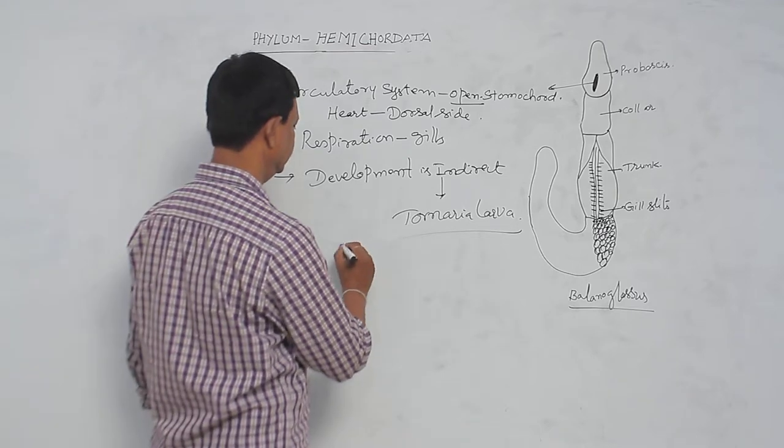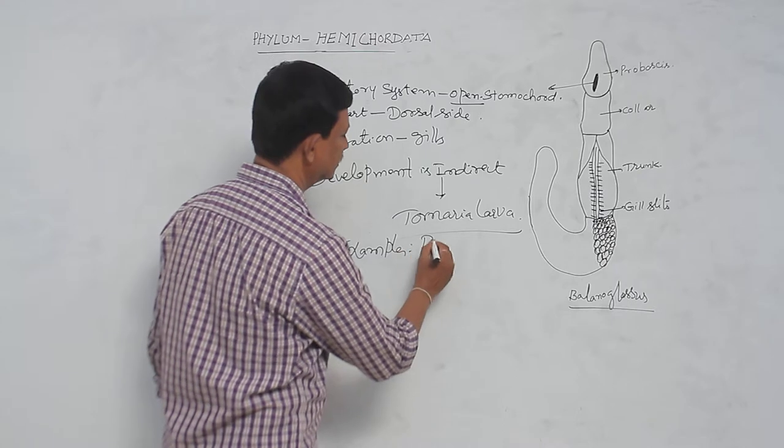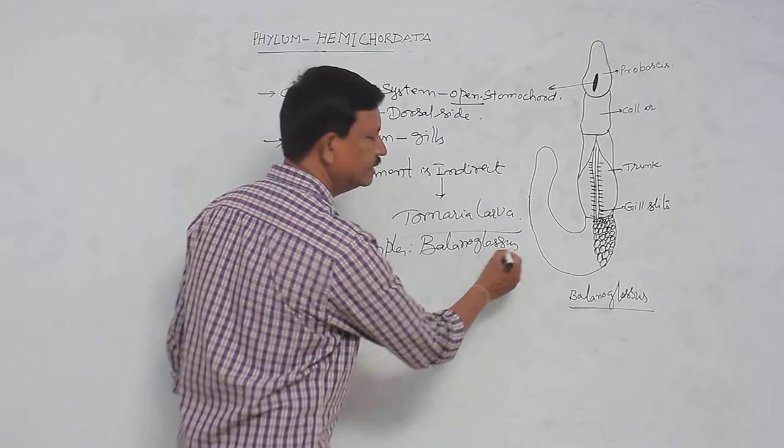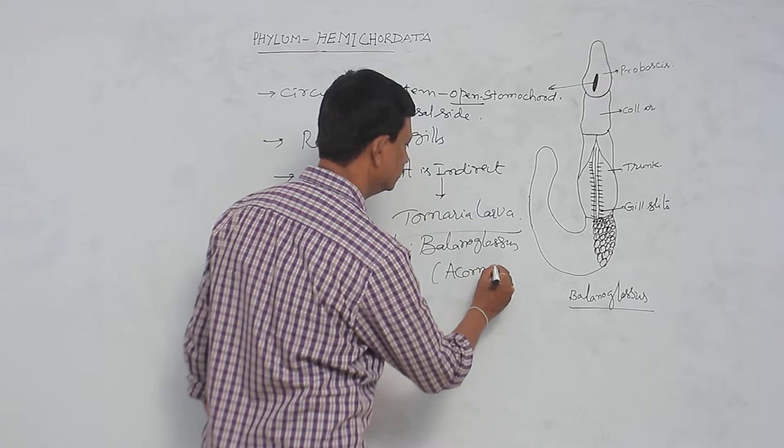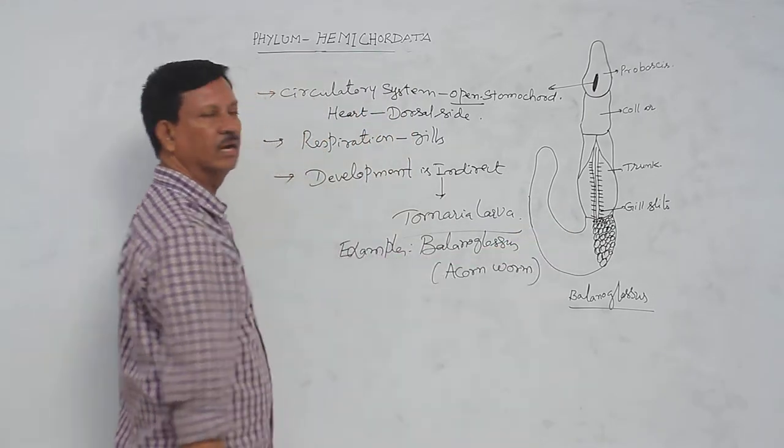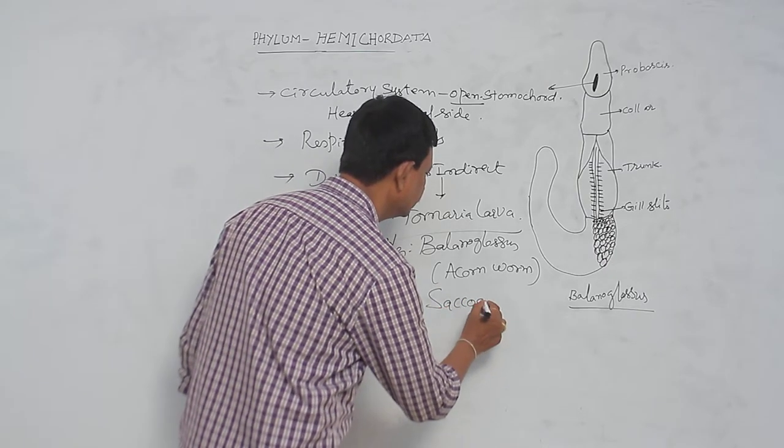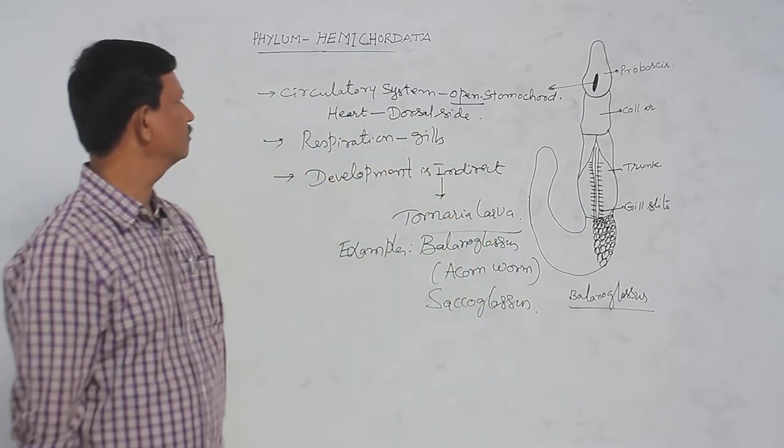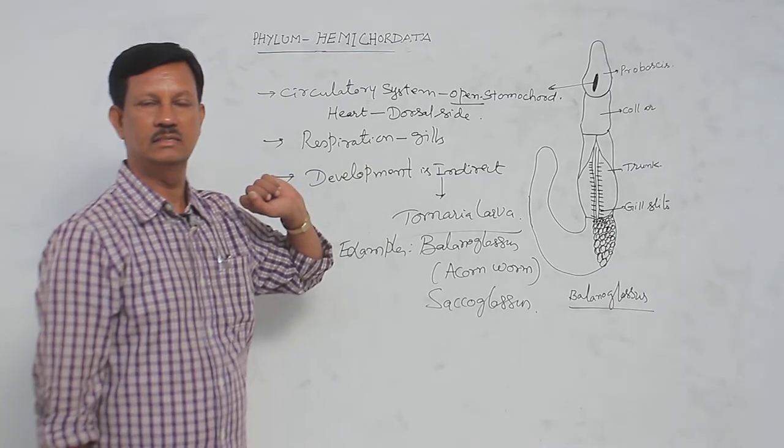Examples are Balanoglossus, this is commonly known as acorn worm. This is the diagram of the Balanoglossus. Another example is Saccoglossus. These are the two examples that come under hemichordata. Once again, we have to recollect some important characters.